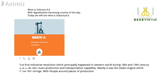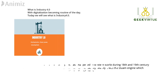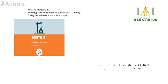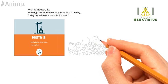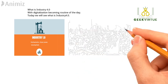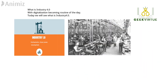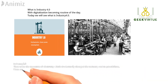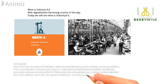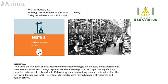Industry 2.0 started with the invention of electricity, which dramatically changed industry and its possibilities. Mass assembly lines and conveyor systems increased production capabilities in factories and manufacturing industries significantly. This is the period where American cities like New York and Chicago, and UK cities like Liverpool and Manchester, performed as pools of resources and human activity to build more and more products.